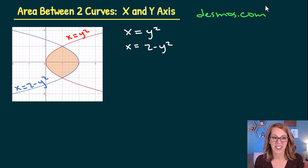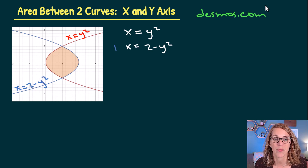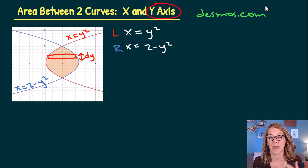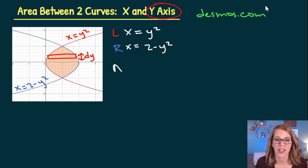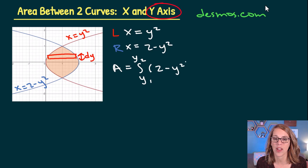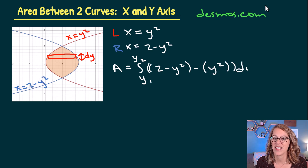Looking at these, I can see that the blue function, the one that opens to the left, is my rightmost function, and the red function is my leftmost. Drawing a rectangle, I can see that the width is in the y direction, which determines my variable of integration. So my formula will be the integral from y1 to y2 of the rightmost function, 2 minus y squared, minus the leftmost function, y squared, all in parentheses, dy.